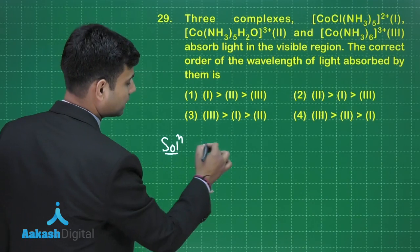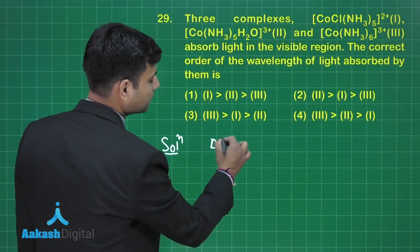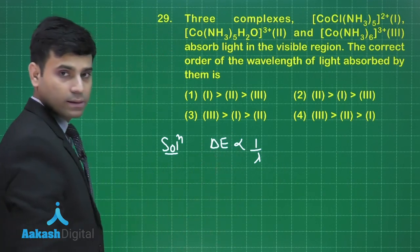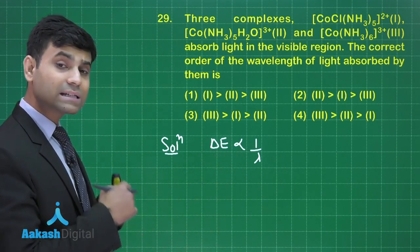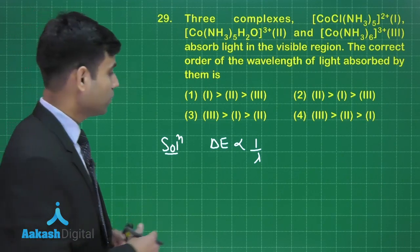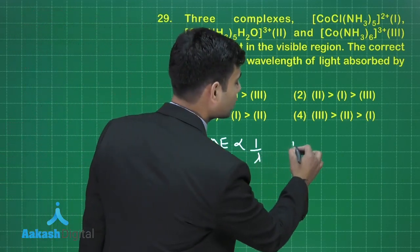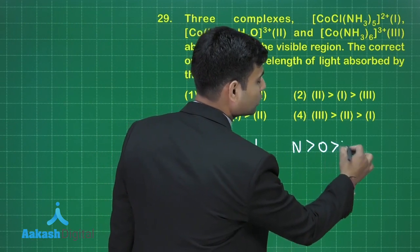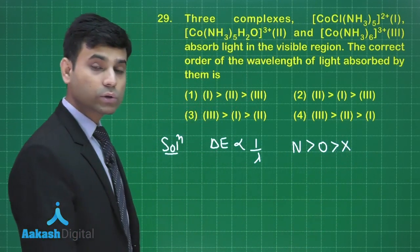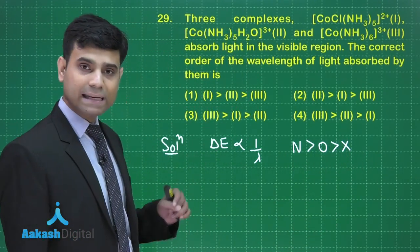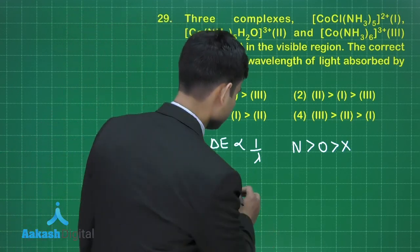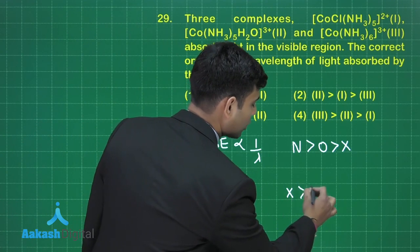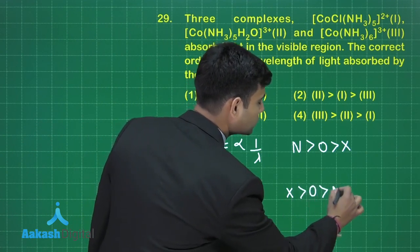We should know that the energy absorbed is inversely proportional to wavelength. Energy absorbed depends on crystal field splitting. Splitting for a nitrogen donor is more than an oxygen donor, which is more than a halogen donor. So wavelength will be maximum for a halogen donor, then oxygen donor, and minimum for a nitrogen donor.